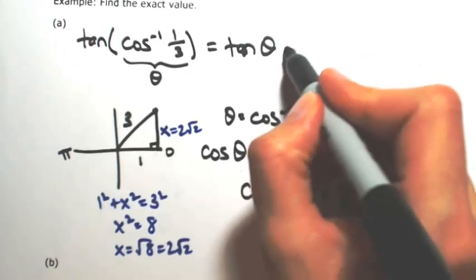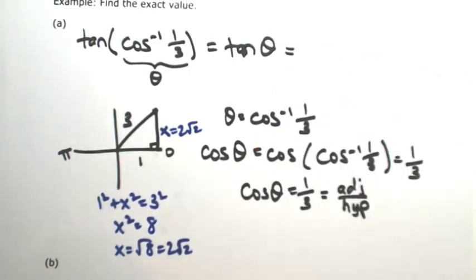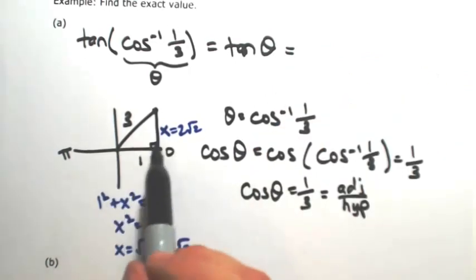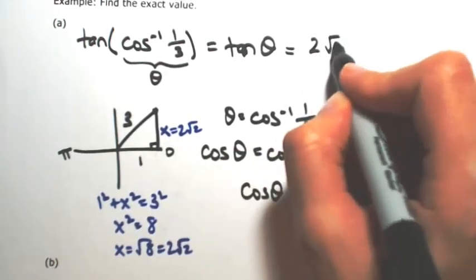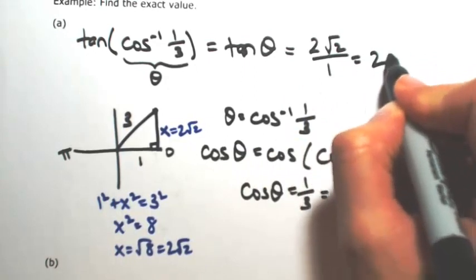So now going back to my problem, tangent of the angle. So tangent is opposite over adjacent. So I'm going to have 2 square root of 2 over 1, giving me 2 square root of 2.